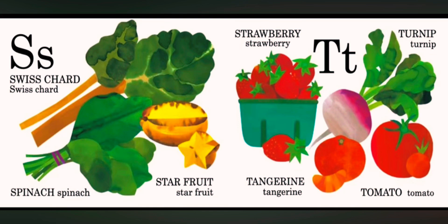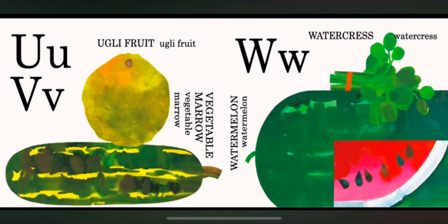T is for turnip. T is for tangerine. T is for tomato. U is for ugly fruit. V is for vegetable marrow.